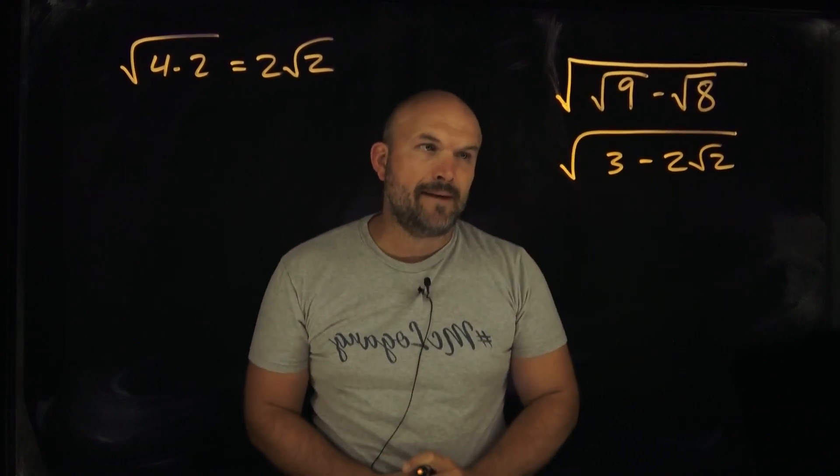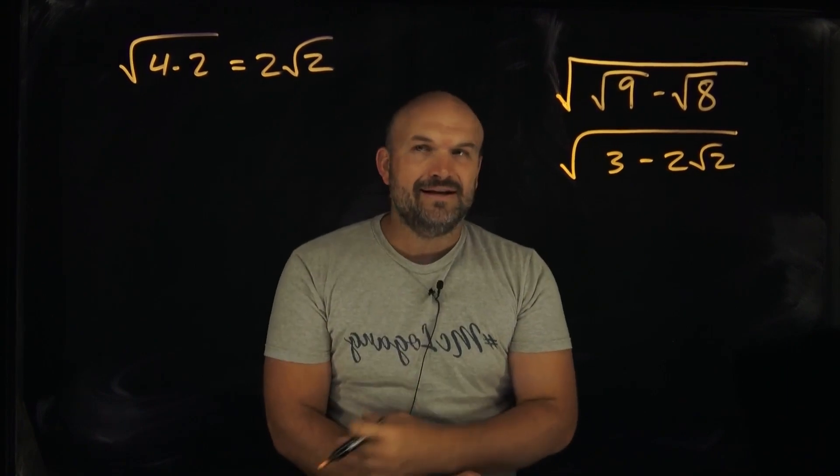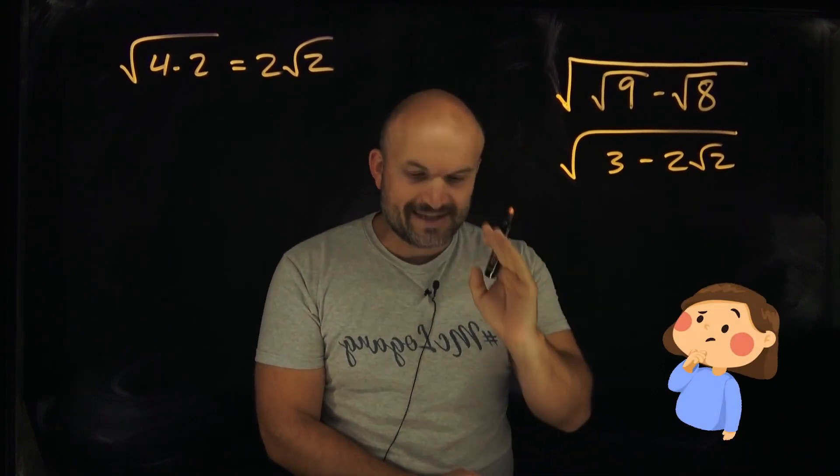But now we kind of come to a problem, right? Because we have the square root of 3 minus 2 radical 2. Like, I can't do that. But so then we got to think about, we're like, so what is it we can do?